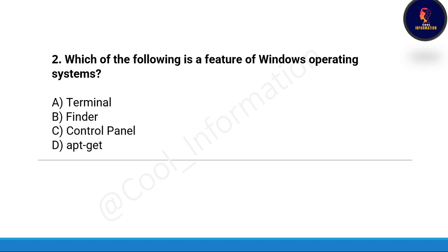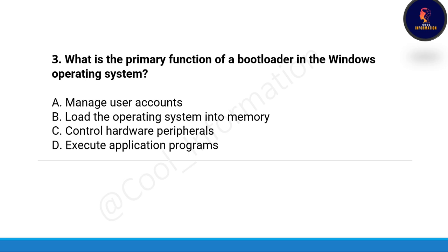Next question: Which of the following is a feature of the Windows operating system? Options are: terminal, finder, control panel, or apt-get. The correct option is Option C, which is control panel.